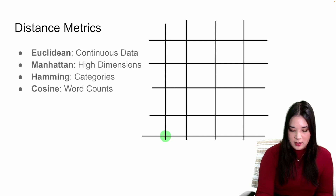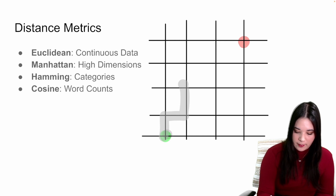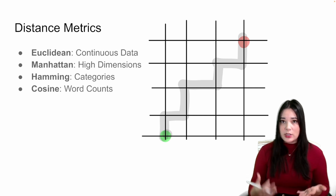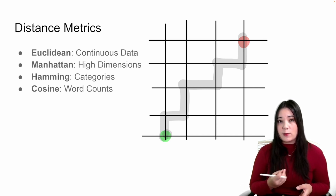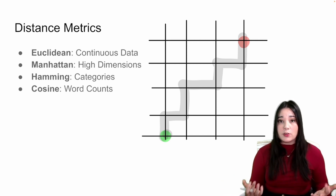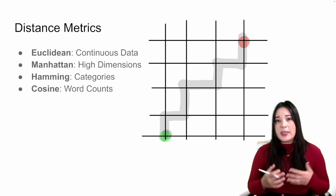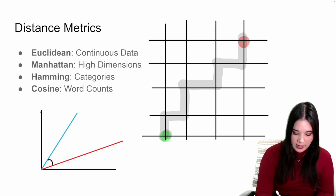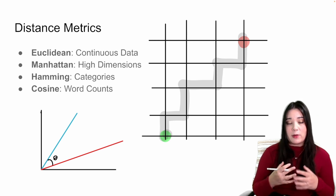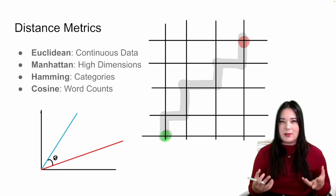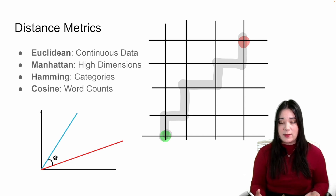For instance, if I wanted to get from this point to this point, I would go like this. Manhattan distance works with continuous data, just like the Euclidean distance, but it's a little bit better performing when you have a ton of different dimensions. And we can use even more non-traditional distance metrics like the Hamming distance, which gives you the distance between categories, or the cosine distance, which gives you the cosine between our two angles as a measure of how similar two points are. Cosine distance can be really useful when you want to do something like cluster customers based on the types of things they buy.